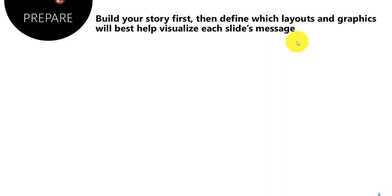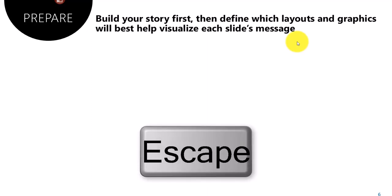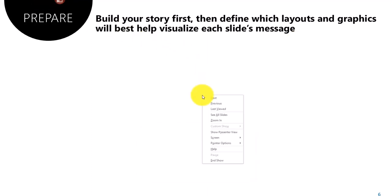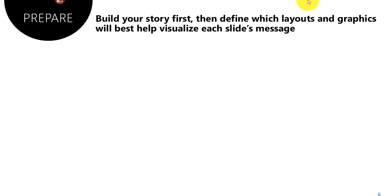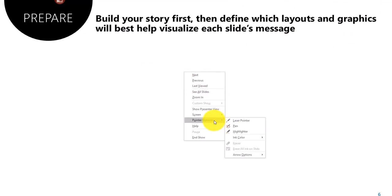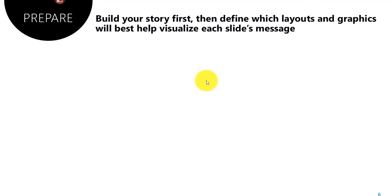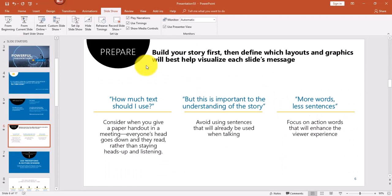There are two ways to exit the slideshow: press Escape on your keyboard, or right-click and select End Show. You can also press E on your keyboard. Also, in the right-click menu under Pointer Options and Arrow Options, you can choose Always to keep your mouse pointer visible so it won't disappear. Let me go ahead and end this slideshow with Escape.